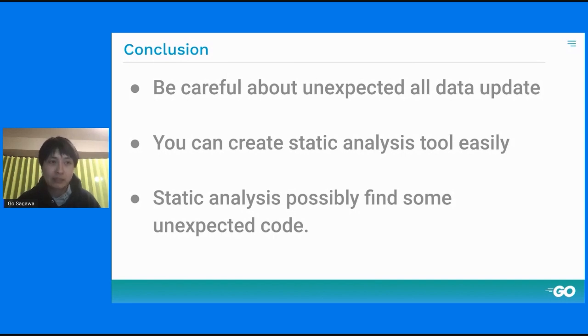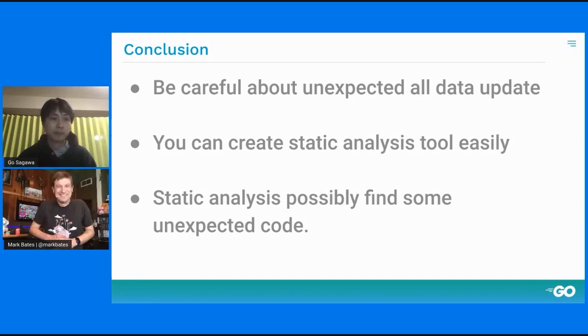This tool works like that. Just set a directory path. I used this for my application and it got a lot of errors. I also find some unexpected problems. In this case, it is alerted because it contains pluck. Compared to find, pluck works differently on the point of logical deletion. I find a bug. In conclusion, be careful about unexpected all data updates when you're using GORM or other library. It's very dangerous. Second, you can create static analysis tool easily. Go is well supported in doing this. Third, static analysis possibly finds unexpected code. It is very powerful and it was very fun. Okay. That's three things that I wanted to say today. Thank you very much. Well, thanks Go. I appreciate that. Put it online. Thank you so much. We appreciate it.